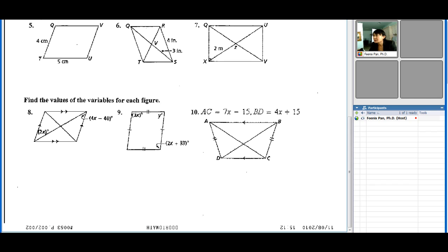We are asked to find QV here in this picture since it's a parallelogram. It has two sets of parallel lines. QV and TU are congruent, and this one and this one are congruent and parallel. So QV is equal to TU, which is equal to 5 centimeters.